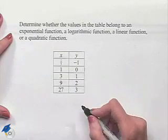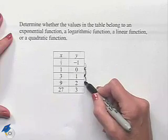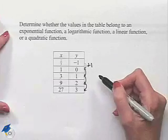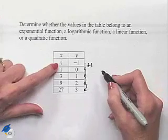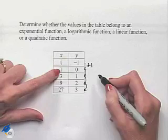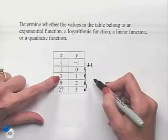We can see that our y-values are increasing by 1 as we move down the table. Our x-values—let's leave that 1/3 off for a moment and just look at the other numbers because they're whole numbers and easy to recognize. We see 1, then 3, then 9, and 27.